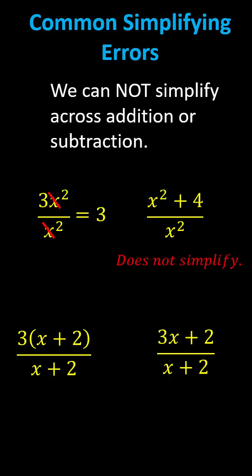Below we have three times the quantity x plus two, divided by the quantity x plus two. This expression does simplify because the three and the x plus two are attached by multiplication. x plus two divided by itself simplifies to one, so the expression simplifies to three.